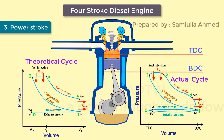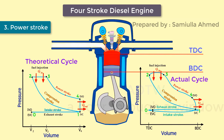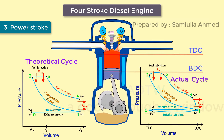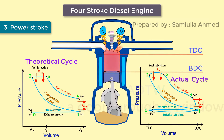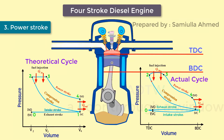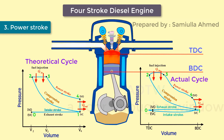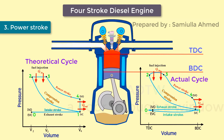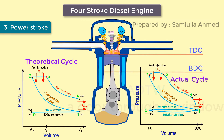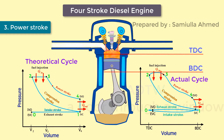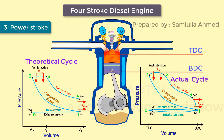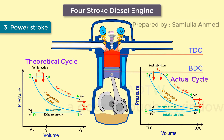In the power stroke, the piston moves from top dead center to bottom dead center, and the cycle passes from point two to four. Both the intake and exhaust valves are closed. At the beginning of the power stroke, the injector injects fuel into the combustion chamber. Due to the high temperature of the compressed air, the fuel self-ignites, causing rapid combustion. The piston is forced toward the crankshaft; volume increases and pressure falls as work is done by the gas on the piston.